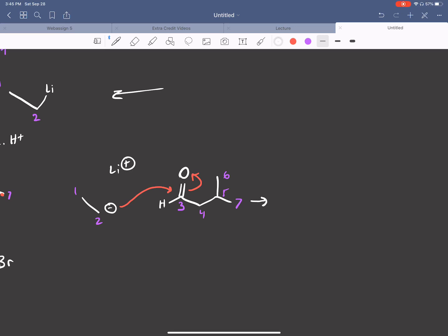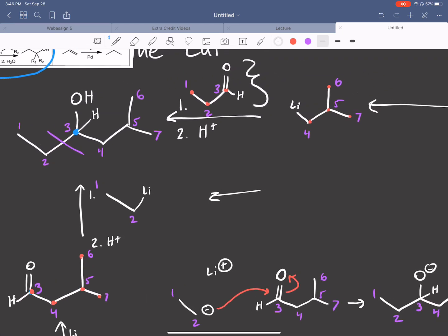And so the way that this works is the negative attacks the carbonyl carbon and this gets kicked up. And so we're going to get this structure here. Count your carbons. One, two, three, four, five, six, seven. We have on three an O minus. And our H that we had, part of the aldehyde is there. And that is the end of step one.